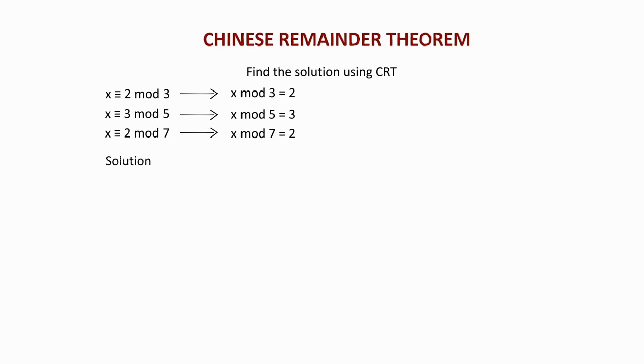As a result, you have to find a1, a2, a3 and m1, m2, m3. So, a1 equals 2, a2 equals 3, and a3 equals 2.